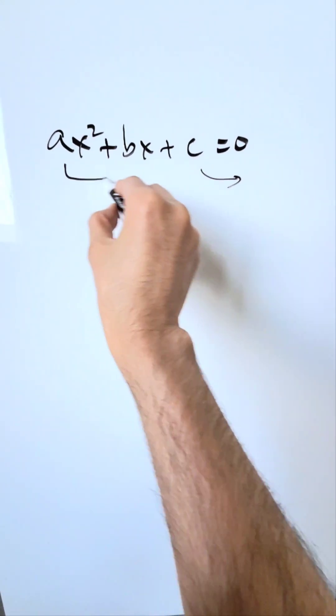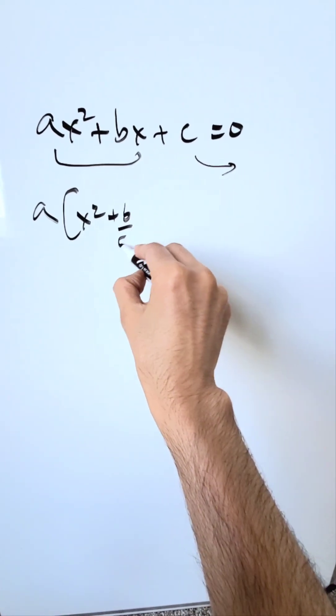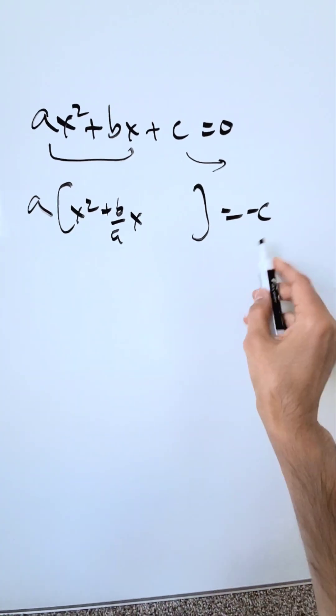Push the c onto the other side and from here isolate your a. You have a, then you have x squared plus b over ax is equal to minus c. Push the a onto the other side.